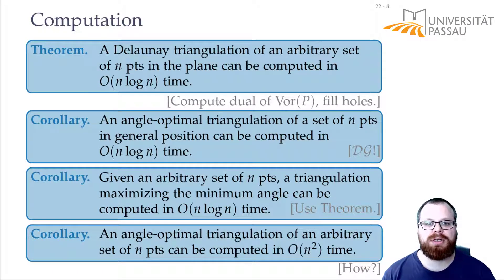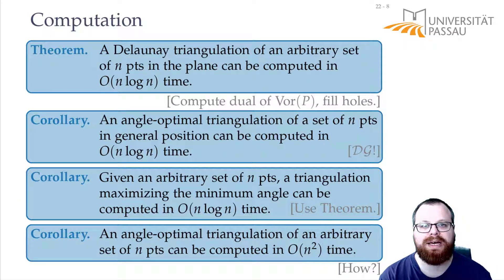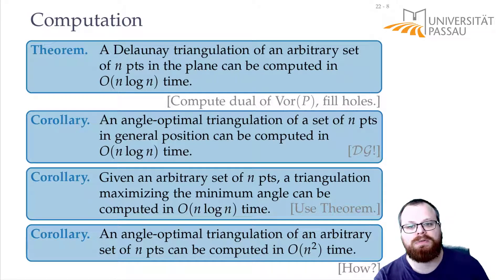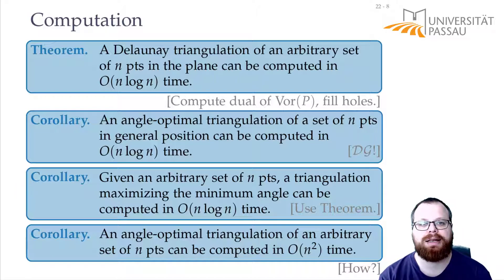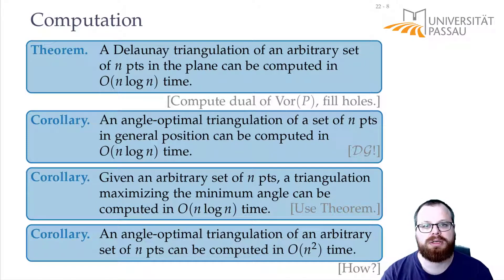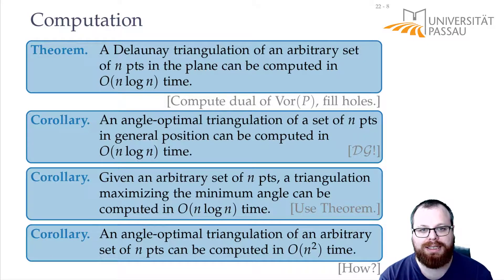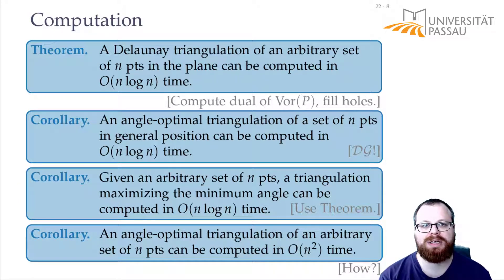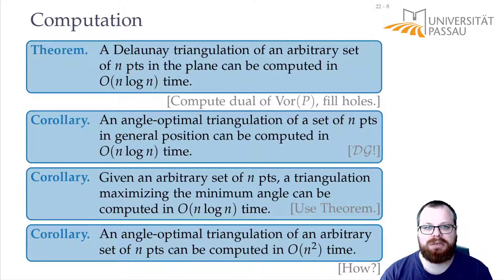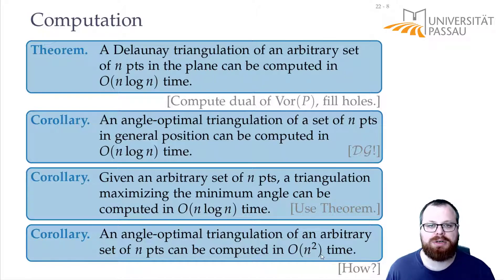To compute an angle-optimal triangulation in O(n²) time, you compute the Delaunay graph and then fill the holes. The holes are completely independent from each other — it doesn't matter how you fill one hole for the other. You only locally want to optimize the angle vector for each hole. Each hole is just a set of vertices that lie on a common circle, so they are in convex position. We can triangulate each hole some way, then run the flipping algorithm — keep flipping edges until we get an angle-optimal sequence. If we are in convex position, after O(n²) flips we reach an optimal triangulation. So filling each hole optimally can be done in O(n²) time.